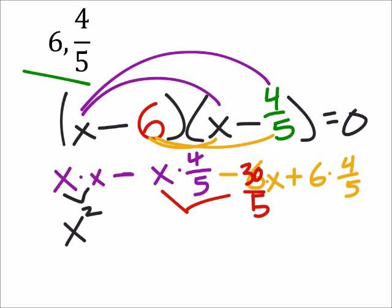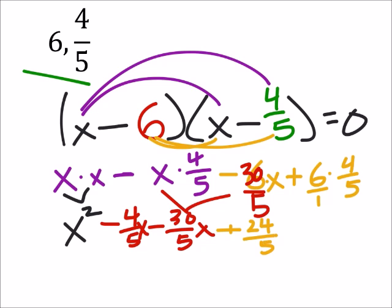So I've got a negative 4/5 x minus 30/5 x. And then I'm going to add this, 6 times 4/5. I can make this fraction multiplication like this, which gives me 24/5. It's okay to keep it like that. If you want to make it a mixed number that's okay, it's just a little extra work.